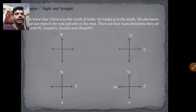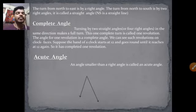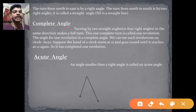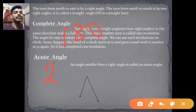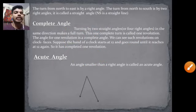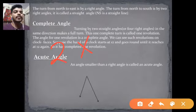Now we will learn about the complete angle. A complete angle is turning a straight angle two times. Our straight angle was 180 degrees, so two times 180 gives us 360 degrees. The complete angle is equal to twice the straight angle — 360 degrees.